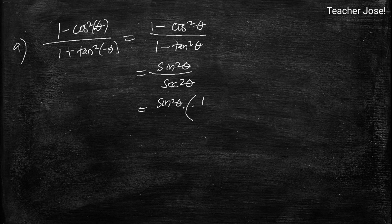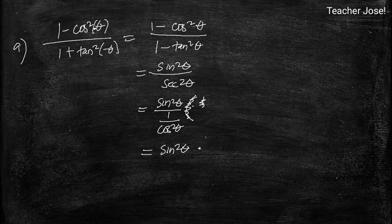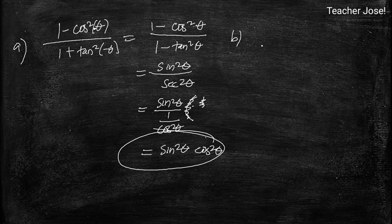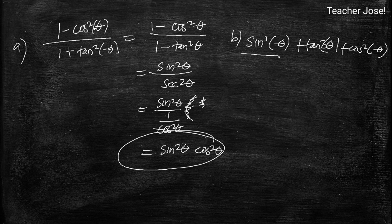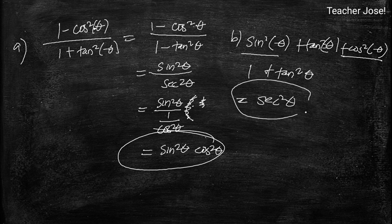Continuing letter A: we have sine squared theta over 1 plus tangent squared, which equals secant squared theta, or 1 over cosine squared theta. Taking the reciprocal gives us sine squared theta times cosine squared theta. That is the answer for letter A. For letter B, we have sine squared negative theta plus tangent squared negative theta plus cosine squared negative theta. Since sine squared and cosine squared equal 1, we get 1 plus tangent squared theta, which equals secant squared theta. That is the answer for letter B.